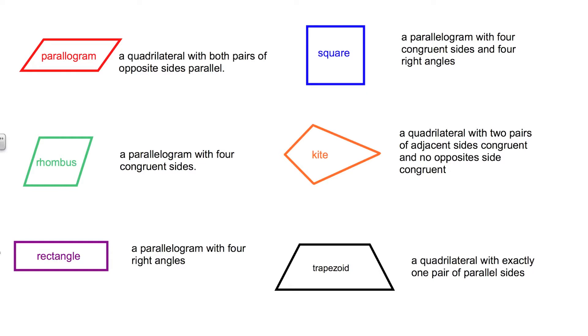Here in the purple we have a rectangle. A rectangle is defined as a parallelogram with four right angles. A rectangle is a special parallelogram in which all angles are 90 degrees.